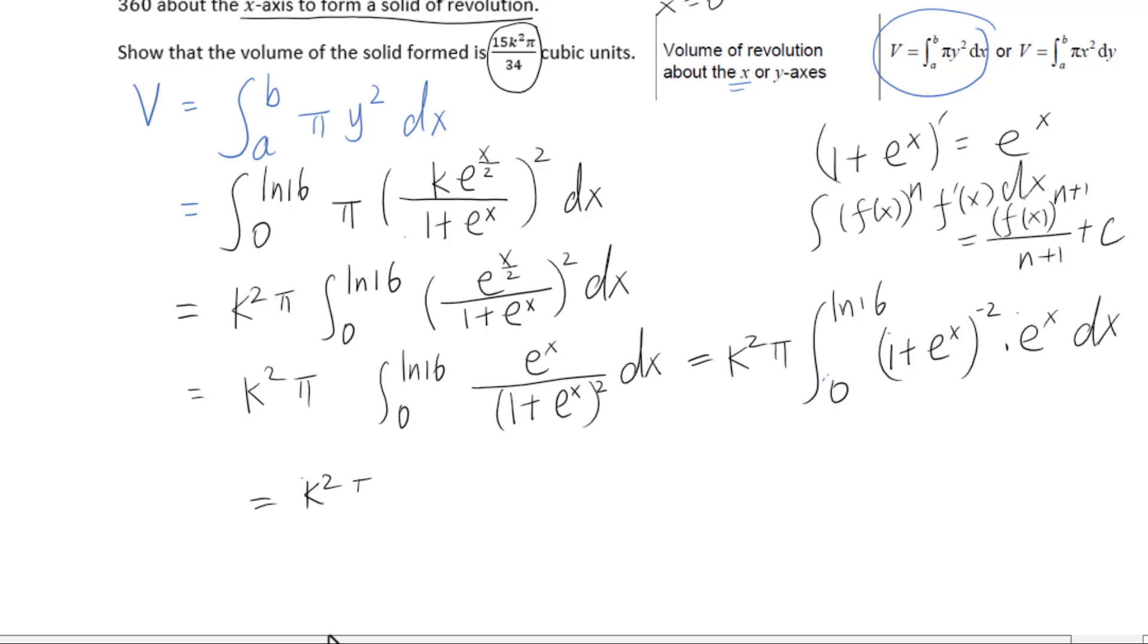So we get k squared pi bracket, 1 plus e to the x power to the negative 1 power over negative 1, from 0 to natural log of 16. We will take negative 1 outside to get negative k squared pi, then 1 over 1 plus e to the x power from 0 to natural log of 16.